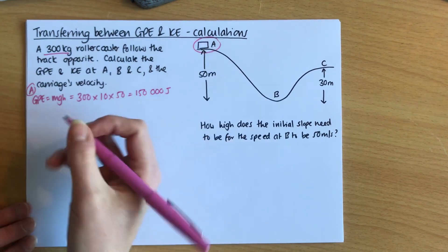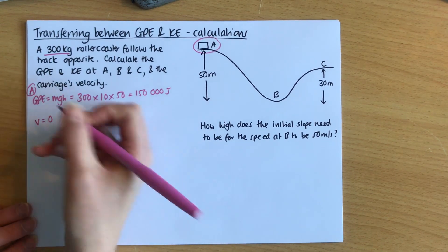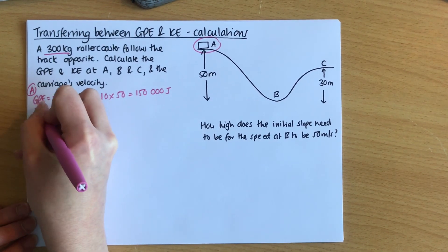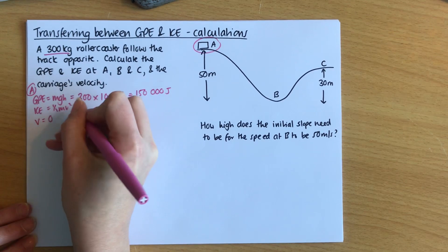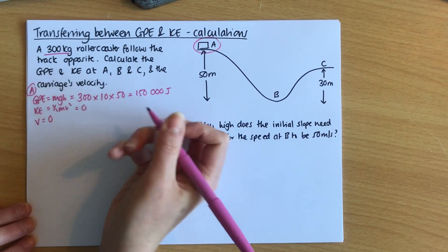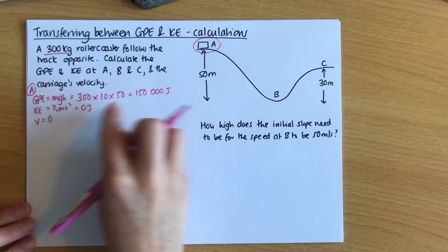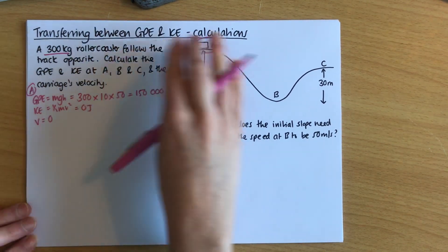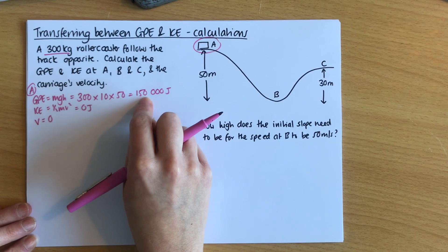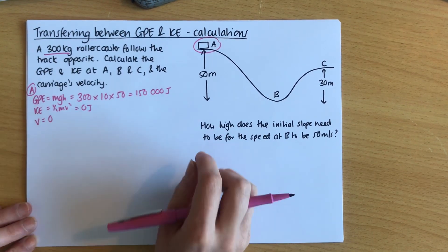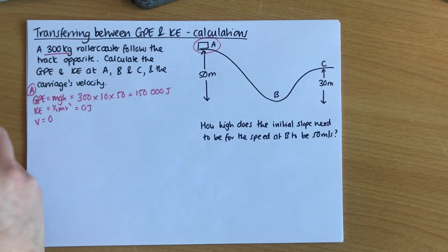At the top, the velocity is going to be zero, which means the KE — which equals one-half mv² — will also be zero. This is important because I now know the total energy at any point on this track will be 150,000 plus zero, which is 150,000 joules. That will be especially useful for point C.